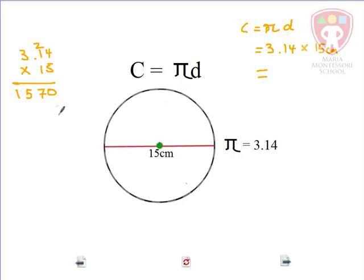First number on the second line is always 0, 4 times 1 is 4, 1 times 1 is 1, 1 times 3 is 3. Add them together, 0, 11 carry the 1, 7, 4.